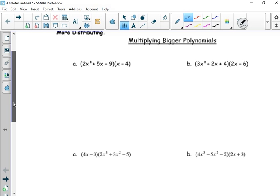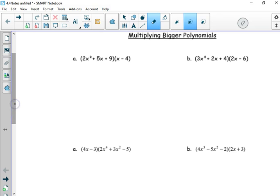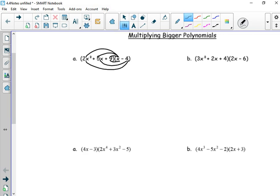So watch where they come from. The 2x squared times everything, the 5x times everything, the negative 4 times everything. Or the two x squared by both, the five x by both, and nine by both. It doesn't matter which way you think about it. Two by three, three by two.